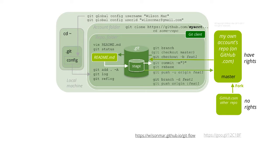Unless you have been designated a committer in the upstream repository, you can't push changes to it. But you can request committers to pull changes from your forked repo. When a committer of that repo merges in — in other words, accepts your PR — you get an email from GitHub.